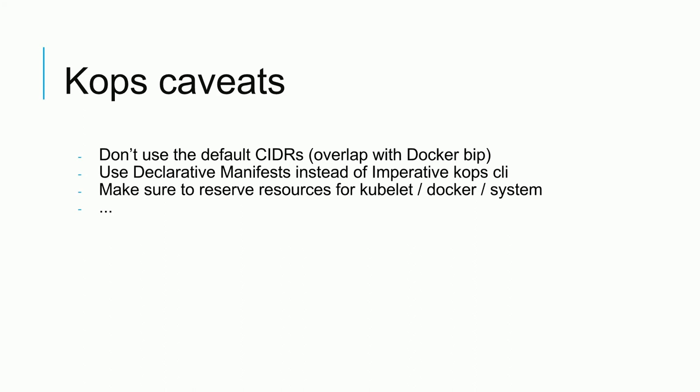I advise using declarative manifests. Don't just use the imperative KOPS CLI. The strength of KOPS is giving you the ability to check in the manifest, track changes, and manage them through source control. Make sure to reserve resources for your kubelet, Docker, and system. We had problems with Elasticsearch taking up all memory, killing the Docker runtime, and then all the pods dying.